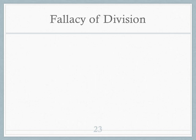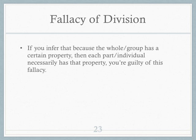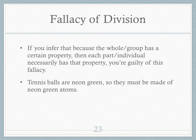Now the other direction: the fallacy of division. The whole or group has a property, so you think all of its parts or individuals must also have that property. 'Tennis balls are neon green' — therefore all their atoms, if we took a microscope, must be neon green. No, that doesn't follow — you've divided the tennis ball into its parts, but the character traits don't necessarily follow through. And finally, another food example: everybody pretty much likes cake — it's amazing. Does that mean all the ingredients on their own would be delicious? Of course not. Chocolate cake is delicious, but I don't want to eat raw eggs, flour by itself, oil, or Crisco. So that's the fallacy of division, and that's it for vagueness and ambiguity.